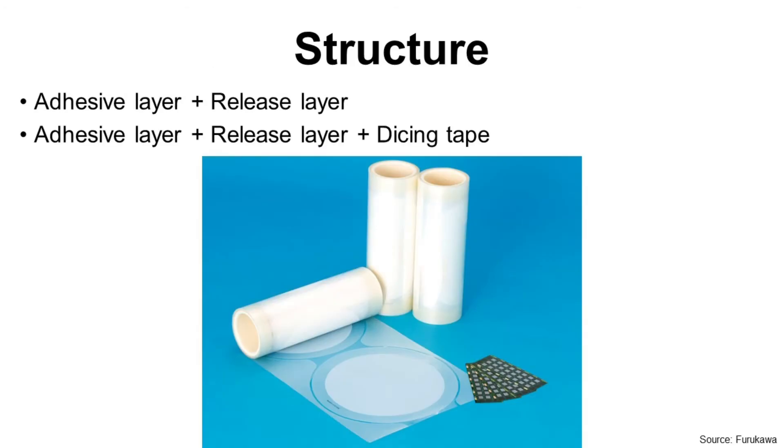There are two different structures. One is adhesive layer plus release layer. This is the original structure and after that we need to apply dicing tape for sawing process. The other one is adhesive layer plus release layer plus dicing tape. This structure integrates die-attach film and dicing tape.